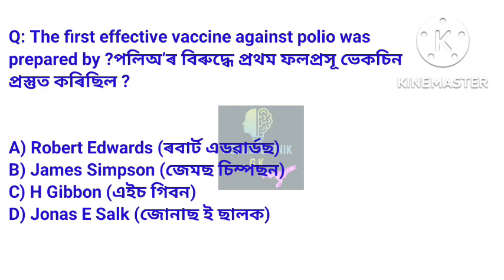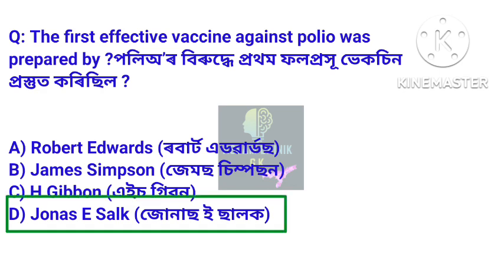The first effective vaccine against polio was prepared by whom? Answer: Jonas E. Salk. Jonas E. Salk was the scientist who first prepared the effective vaccine against polio.